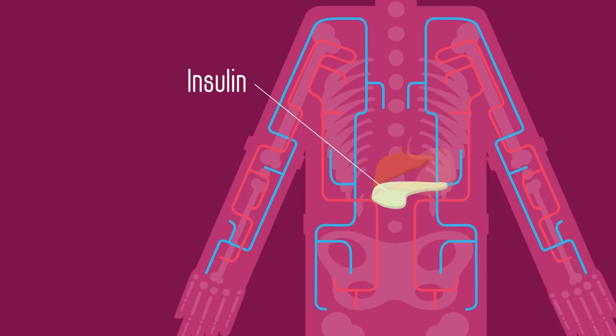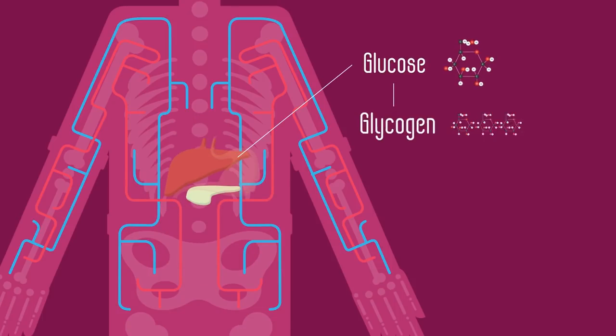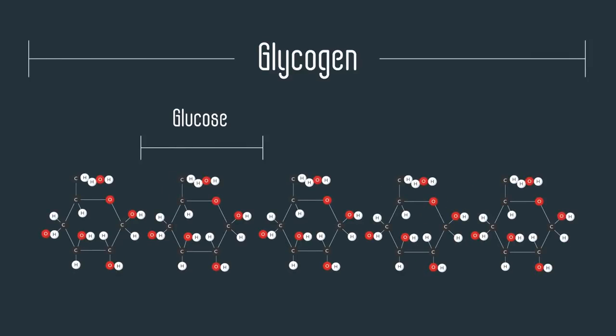Remember that a gland secretes hormones which act on specific target organs. In this case, the target organ is your liver, which is stimulated to convert glucose to glycogen. Glycogen is basically long multi-branched chains of glucose monomers stored in liver and muscle cells.